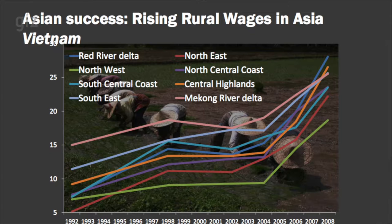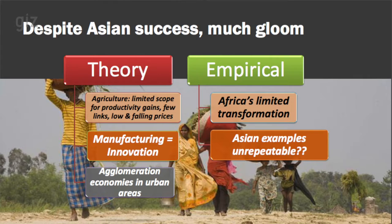Despite the many successes of transition and transformation in Asia, when we look at debates in contemporary sub-Saharan Africa, there is enormous gloom about the prospects for transformation and transition. That gloom comes partly out of the interpretation of economic theory. There is longstanding writing in the economic literature saying that agriculture has limited potential for productivity gains, doesn't generate productive linkages within the economy the way other sectors do, and is subject to low and falling prices. In a word, the prospects of agriculture are grim, and through the greats of the 19th century there is tremendous pessimism.